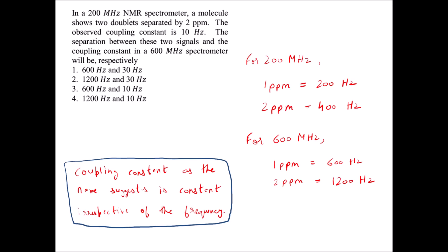In a 200 MHz NMR spectrometer, a molecule shows two doublets separated by 2 ppm. In a 200 MHz instrument, 1 ppm corresponds to 200 Hz. So from 0 to 1 ppm is 200 Hz, 1 to 2 ppm is another 200 Hz, and so on — each ppm gap equals the instrument frequency in Hz. Therefore, 2 ppm equals 400 Hz on a 200 MHz instrument.